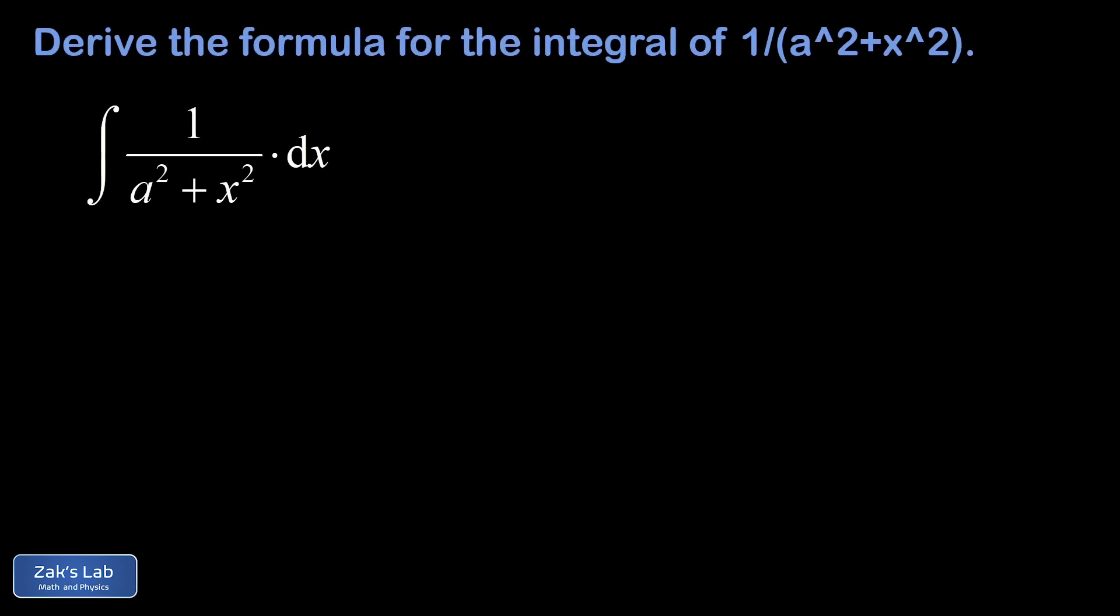In this video we're deriving the formula for the integral of 1 over a squared plus x squared, where a is a constant. This is a classic addition to any table of integrals, but it turns out we can actually derive the result by using a simple u substitution or by informally using the chain rule backwards.